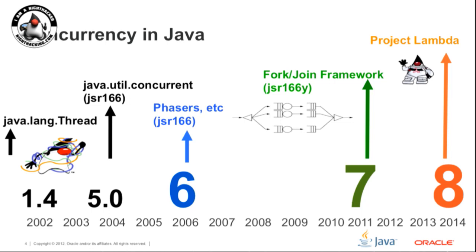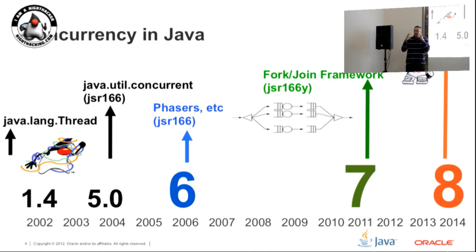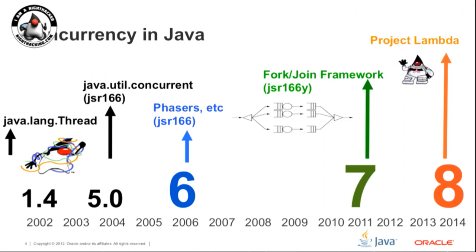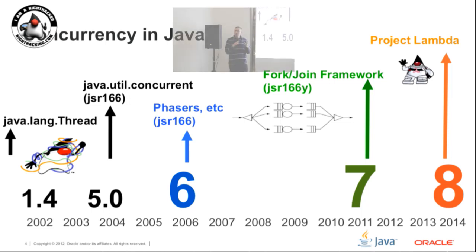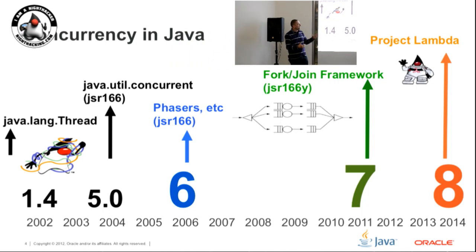In Java SE5 we introduced the concurrency utilities, giving us semaphores, mutexes, and read-write locks. Java SE6 introduced more APIs for coordinating threads. In Java SE7 we introduced the fork-join framework - the idea of taking a single task, decomposing it recursively into subtasks until each was small enough to execute in a single thread. That saved developers from worrying about the thread pool, queue organization, and thread stealing. But we wanted to go further - to make it simpler to write really good parallel code - and that's what we're doing in Java SE8 with lambda expressions.